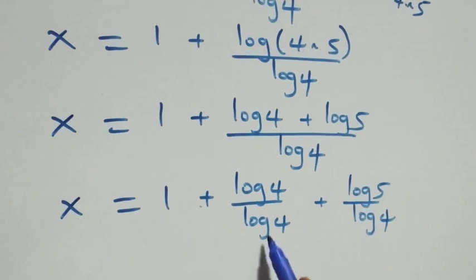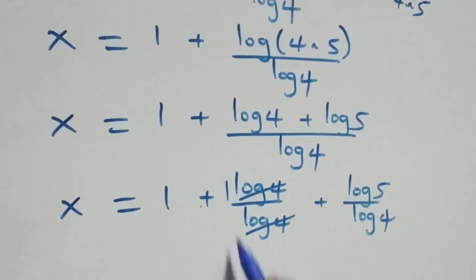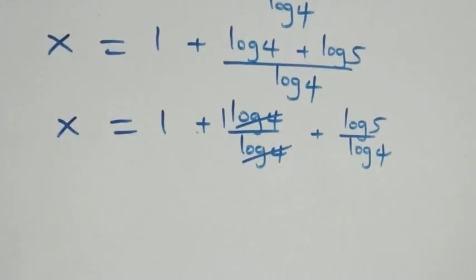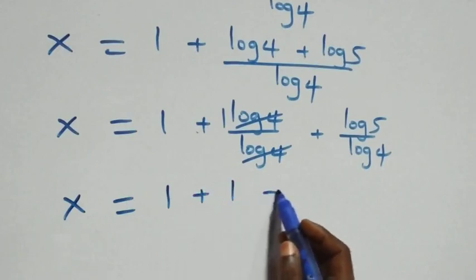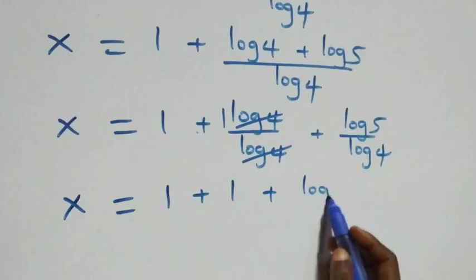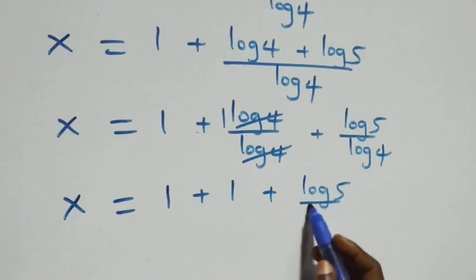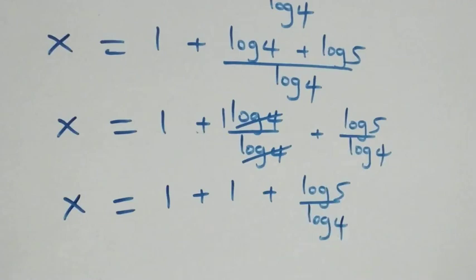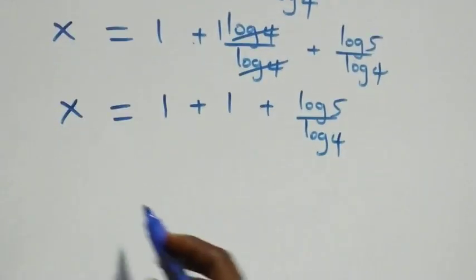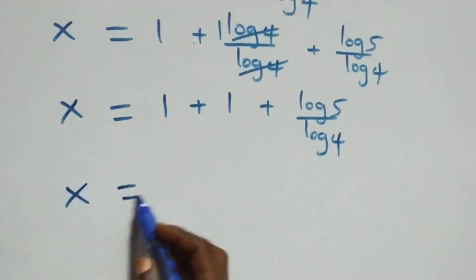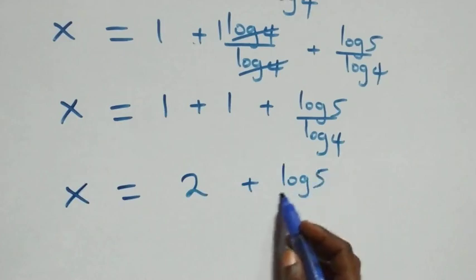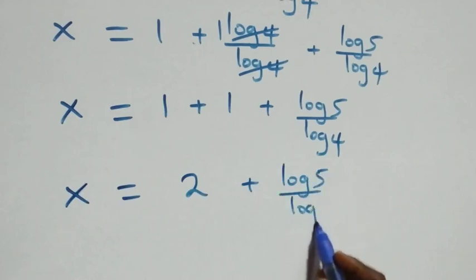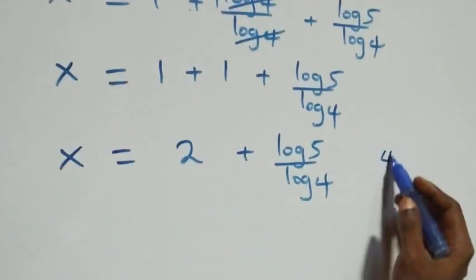Log four over log four cancels to one, so we have x equals one plus one plus log five over log four. This simplifies to x equals two plus log five over log four.